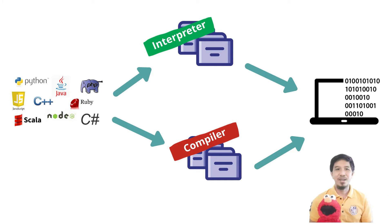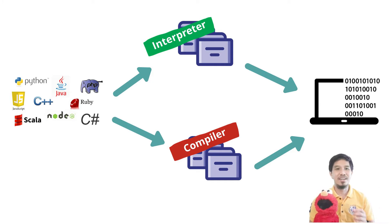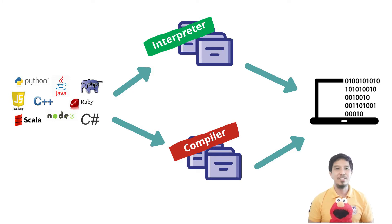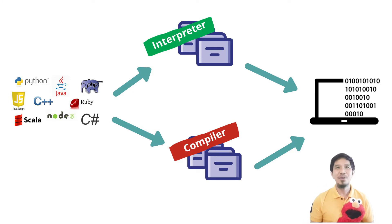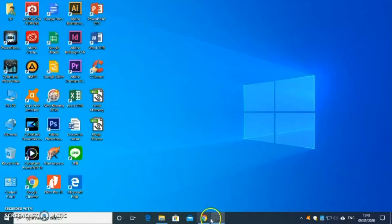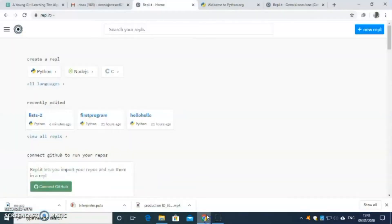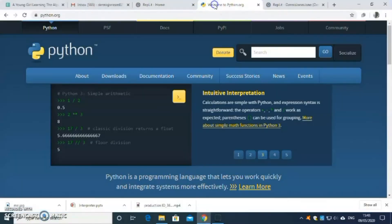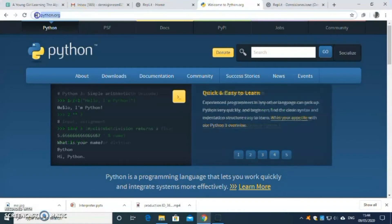So we learned that we need machines in order for us to use or to write Python. And how can we get this? To get the interpreter that we need for Python, we have to go on the website.